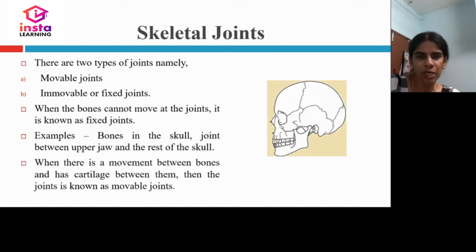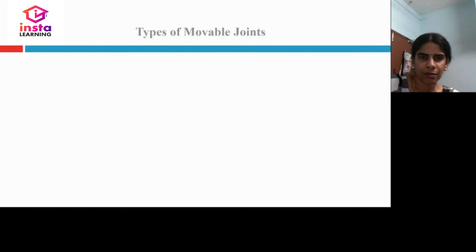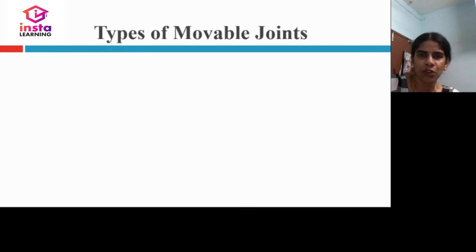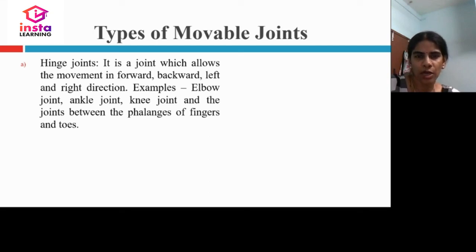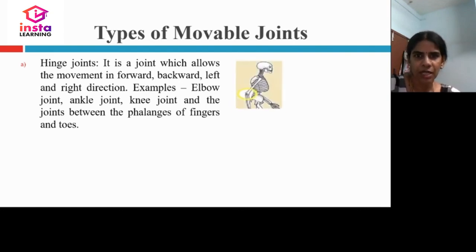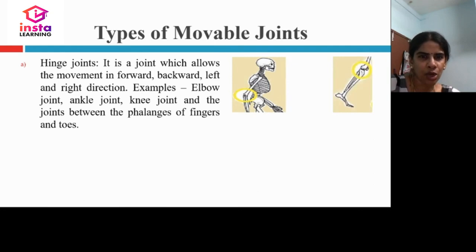When there is movement between bones with cartilages between them, we call it a movable joint. The first type is the hinge joint, which allows movement in forward, backward, left, and right directions. Examples include the elbow joint, ankle joint, knee joint, and the joints between the phalanges and fingers.